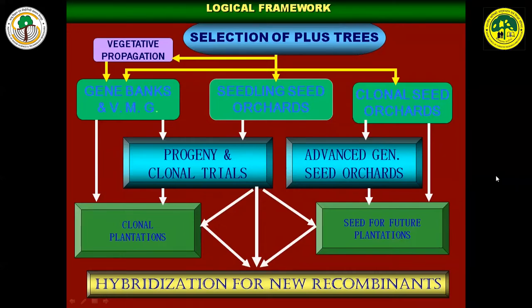This is the basic framework any geneticist or breeder uses for a tree improvement program, which starts with selection as the most important and basic step. Then we have to develop different repositories, different products and populations, and at some point also go for hybridization so that new recombinants are brought in and utilized for commercial cultivation.